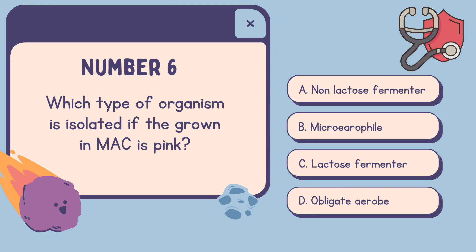Number six: Which type of organism is isolated if the growth in MAC is pink? A. Non-lactose fermenter. B. Microaerophile. C. Lactose fermenter. Or D. Obligate aerobe. The correct answer is C. Lactose fermenter.